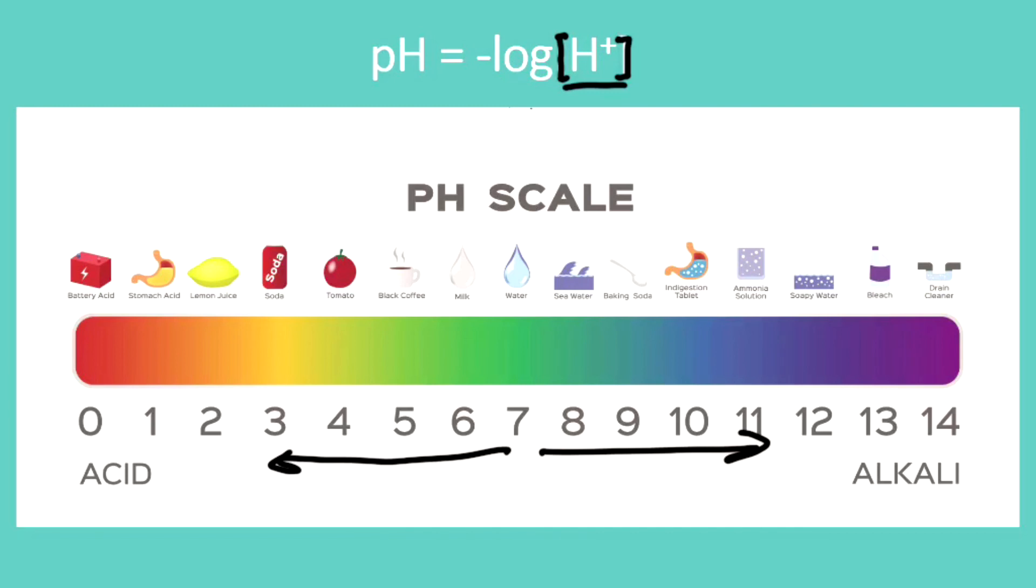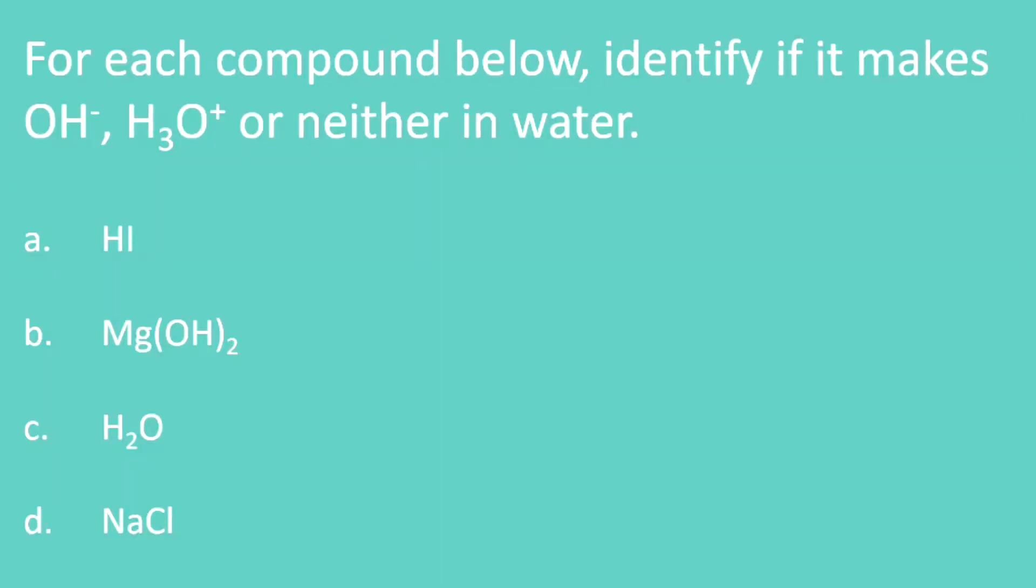Okay, now let's practice identifying acids and bases. So for each of these problems, for each of these compounds below, identify if it would make OH minus, H3O plus, or neither in water. So would it make something that's basic, acidic, or neither? So I'll give you a few seconds here to pause the video and go ahead and try your best to answer it.